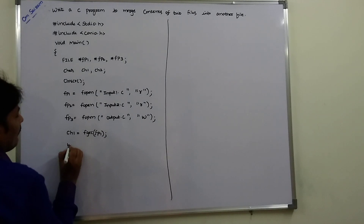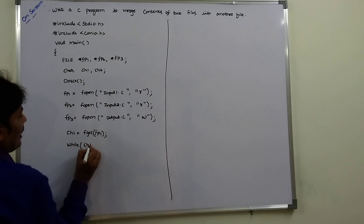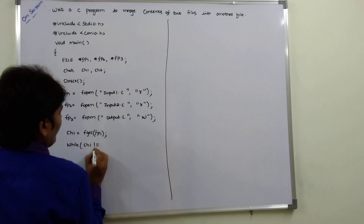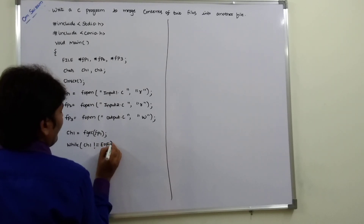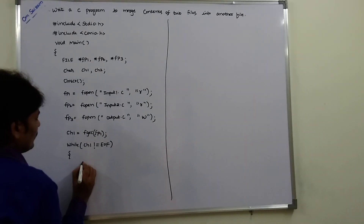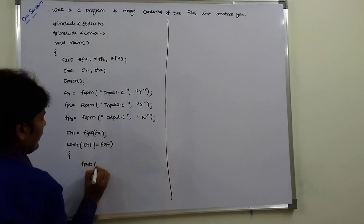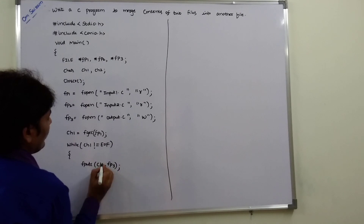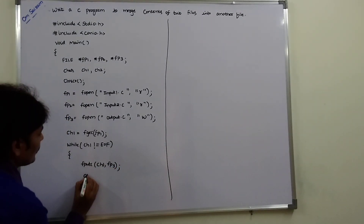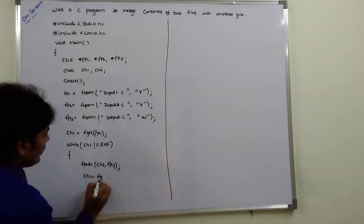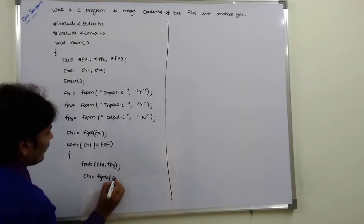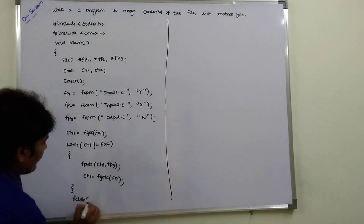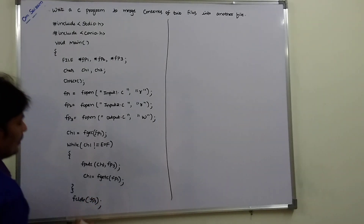ch1 is equal to fgetc of fp1. While ch1 is not equal to EOF, we execute fputc of ch1 comma fp3, then ch1 is equal to fgetc of fp1. After the loop ends, fclose of fp1.